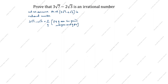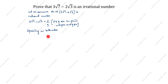Next step: squaring on both sides. Why are we squaring? Because there is a root, so that is why we remove the root by squaring on both sides.